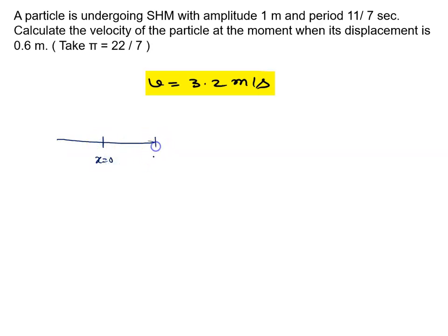Amplitude is given you 1 meter and time period is given 11 by 7 second. Or ye aapke x ki value hai 0.6 meter. Or ye aapke velocity nikaal ni hai.